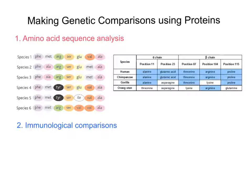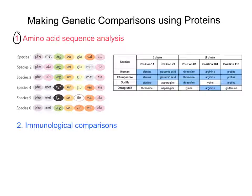I want to start with number one: amino acid sequence analysis. Just beneath that title, I've got a picture with six species and just a sample — seven amino acids in a chain for each of the six species. A lot of the amino acids have the name shortened to just three letters: GLU is glutamine, VAL is valine, MET is methionine. So we've just shortened them to three letters in this image.